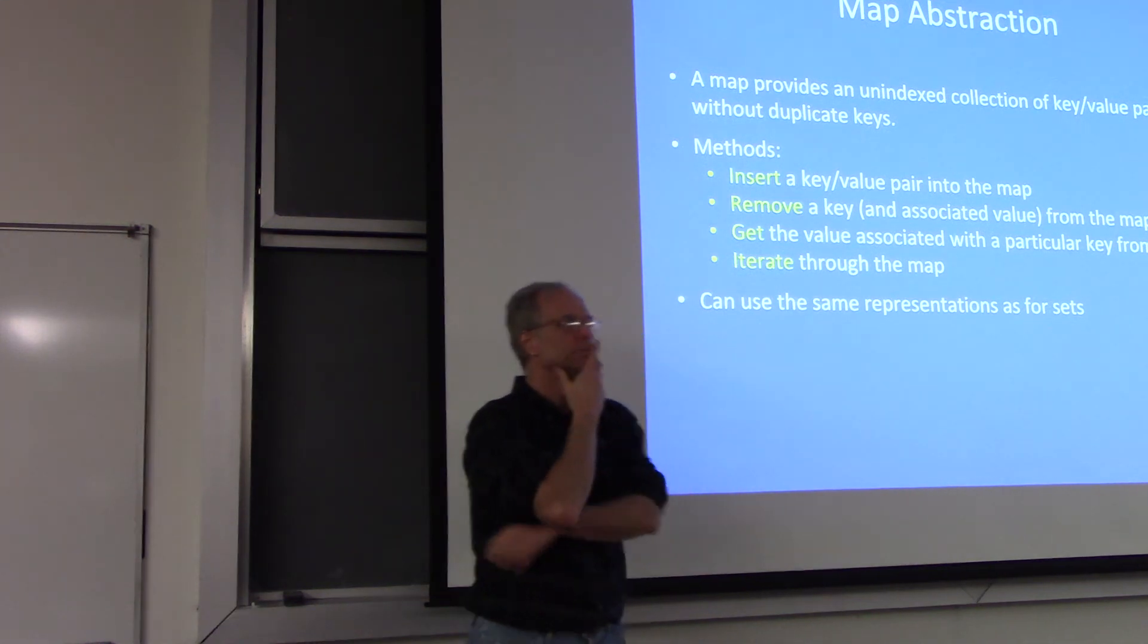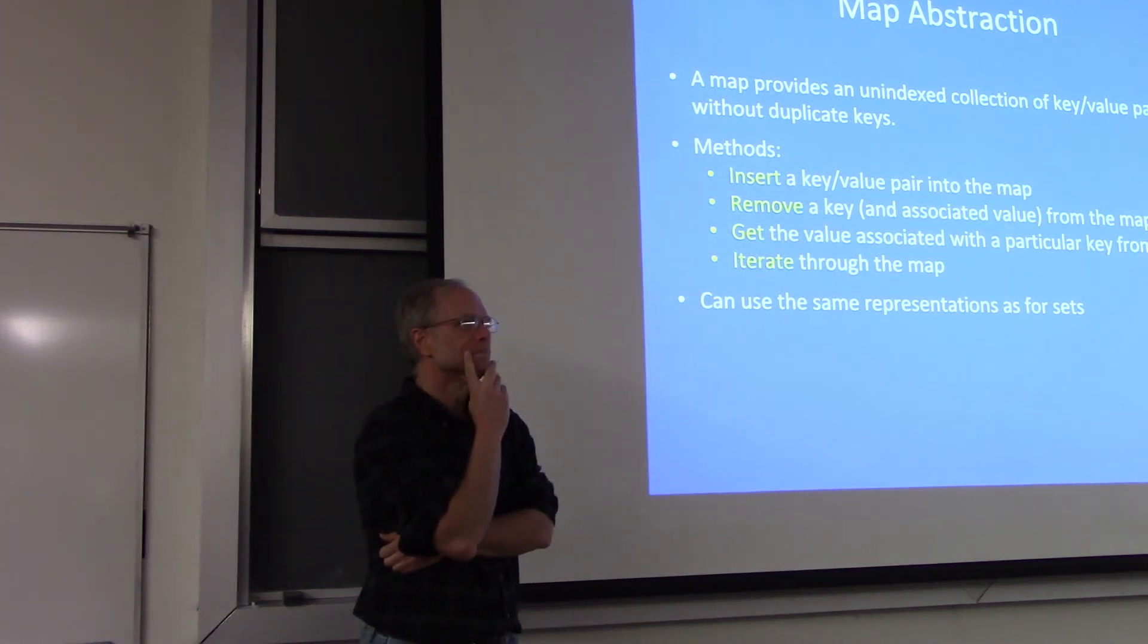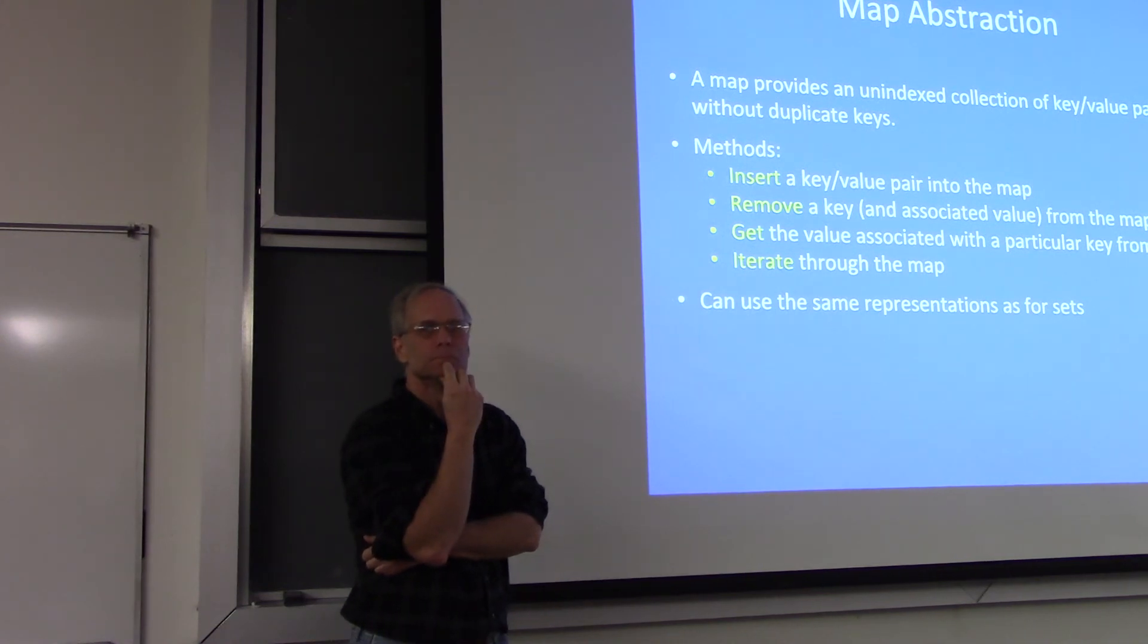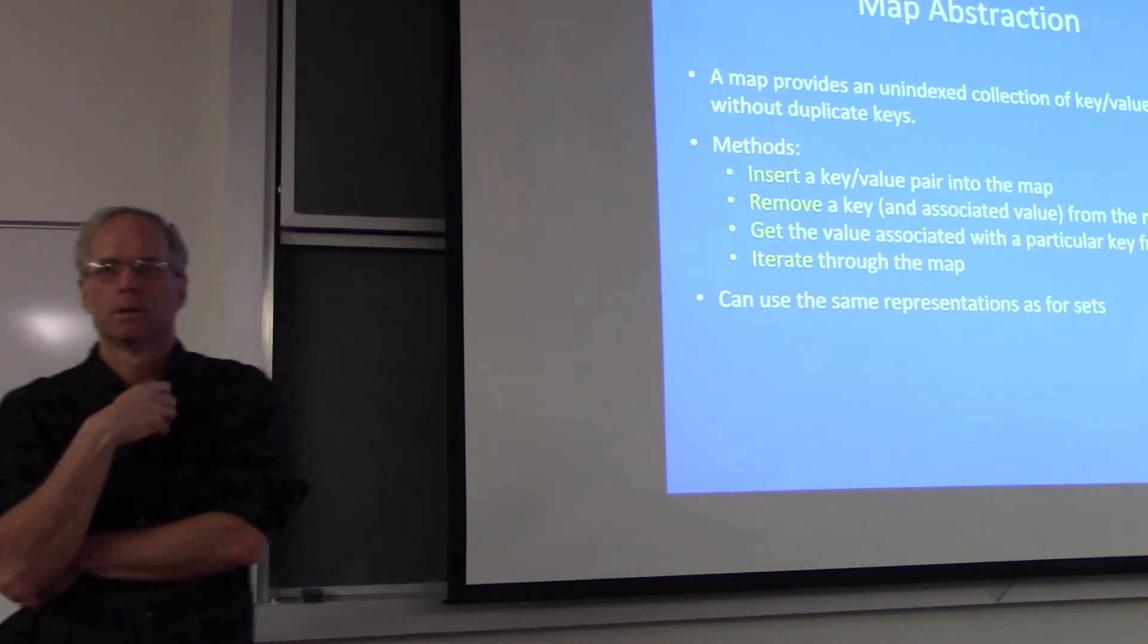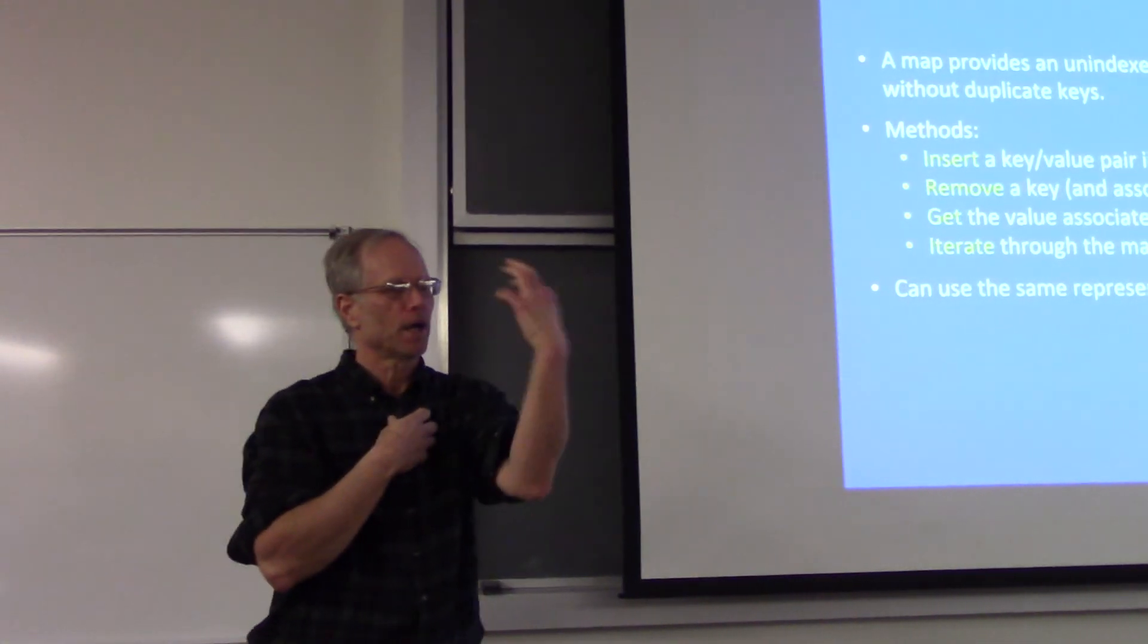So how do you represent a map? You can use either the tree or the hash table. Right, you can use either the technology you use for set. You can use a binary search tree, you can use a hash table. What's the only change you have to make? You just have to have a reference to the value. Right, everywhere you store the key,